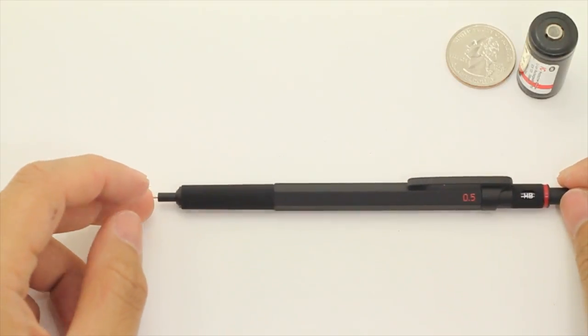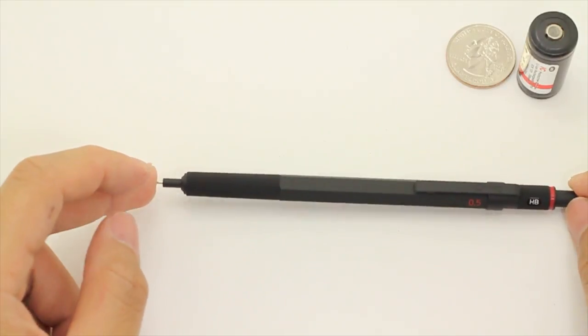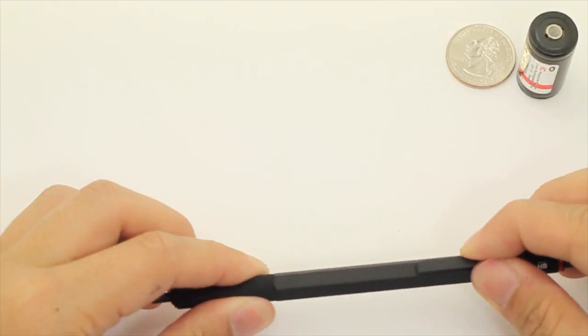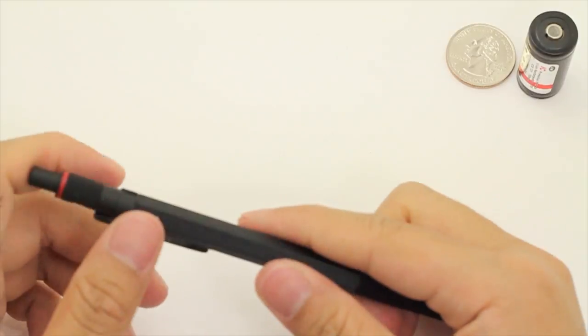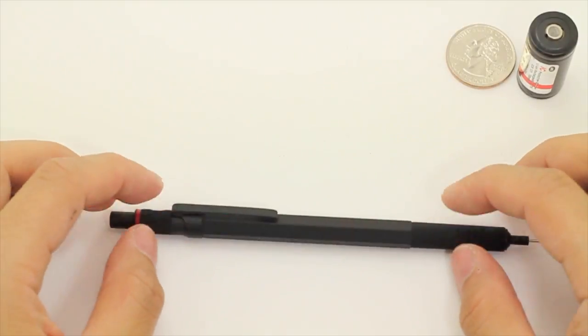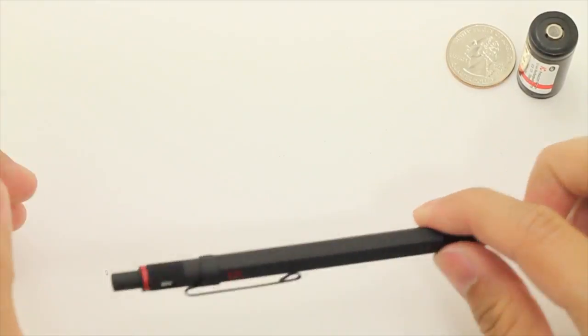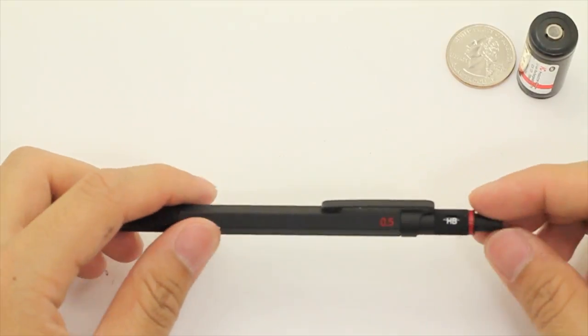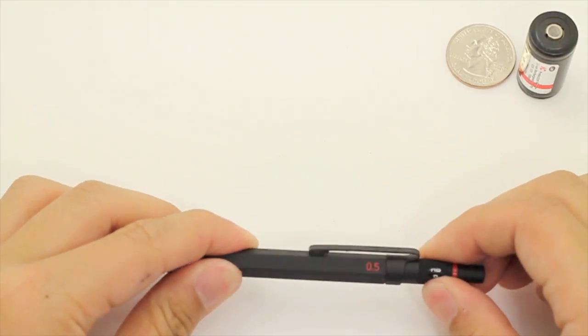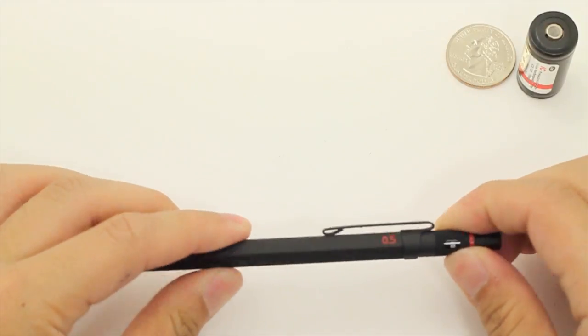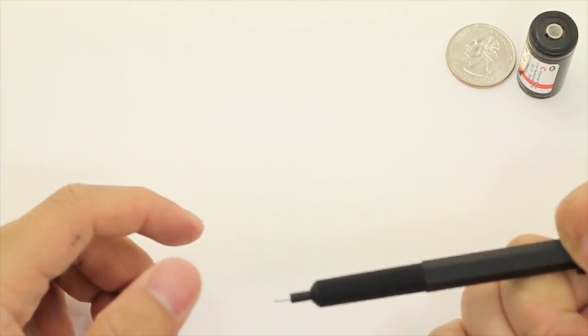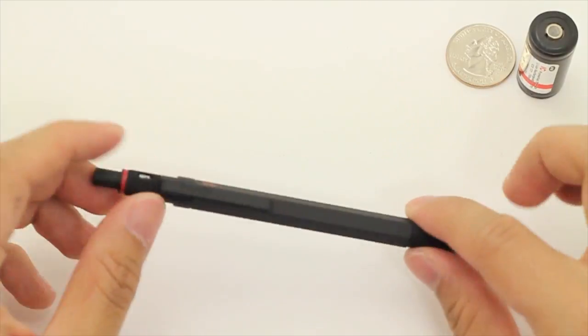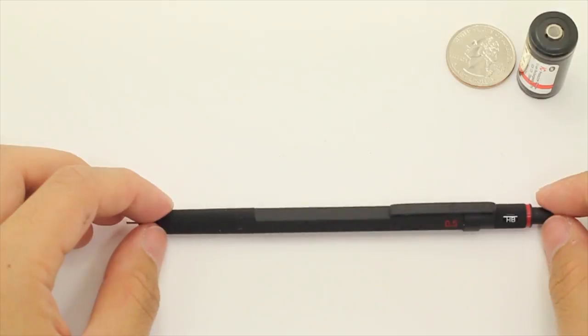It's $30, so really think if you need a pencil that's that expensive because there's a chance you can lose it. Otherwise it's got a sturdy pocket clip, the knurling is great, and this hexagonal anti-roll mechanism combined with the clip, you know, it's just something you can keep on the desk. And the tail cap here with the signature red ring, you can rotate this here to choose your lead grade, sort of. It advances lead nicely, it feels good, I really like this pencil, I just wish it was more suited for pocket carry.